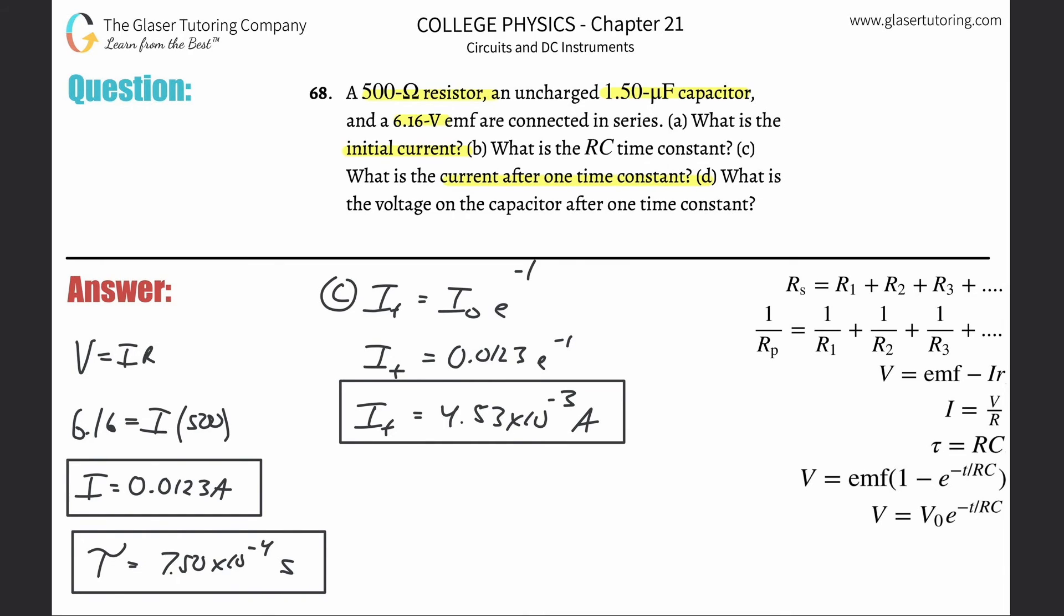And my goodness, now it's asking us, what is the voltage on the capacitor after one time constant? So now this is literally the same thing. We're just going back to this formula, the original, that the voltage at some point in time is equal to the initial voltage multiplied by E to the negative T over RC. We already noticed what's going to happen here. If it's one time constant, this whole thing just goes to one. So all I need to do to figure out that voltage after one time constant is to know the initial. What's the initial? 6.16.